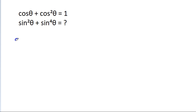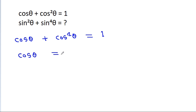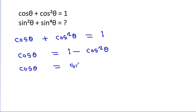So we have cos θ + cos²θ = 1. Therefore, cos θ = 1 − cos²θ, and since 1 − cos²θ = sin²θ, we get cos θ = sin²θ. Let this be equation 1.